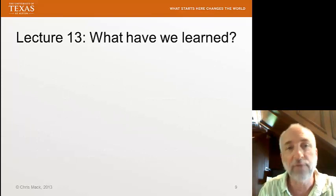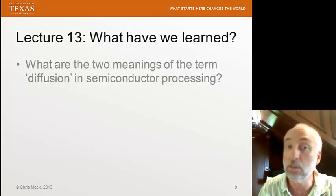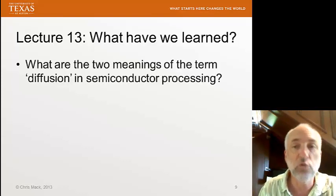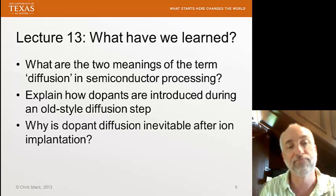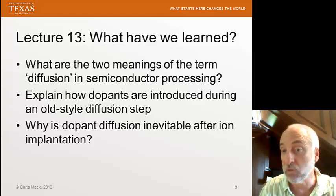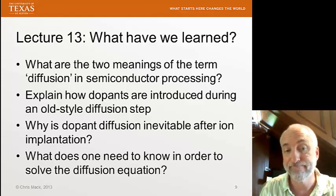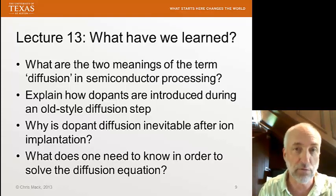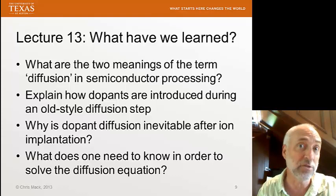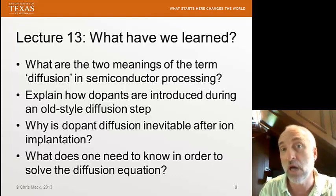After listening to this lecture, you should easily be able to answer these questions. What are the two meanings of the term diffusion in semiconductor processing? Explain how dopants are introduced during an old-style diffusion step. Why is dopant diffusion inevitable after ion implantation? And finally, what does one need to know in order to solve the diffusion equation? In our next lecture, we're going to supply some of those things we need to know to solve the diffusion equation, and we'll solve it in a couple of common cases.